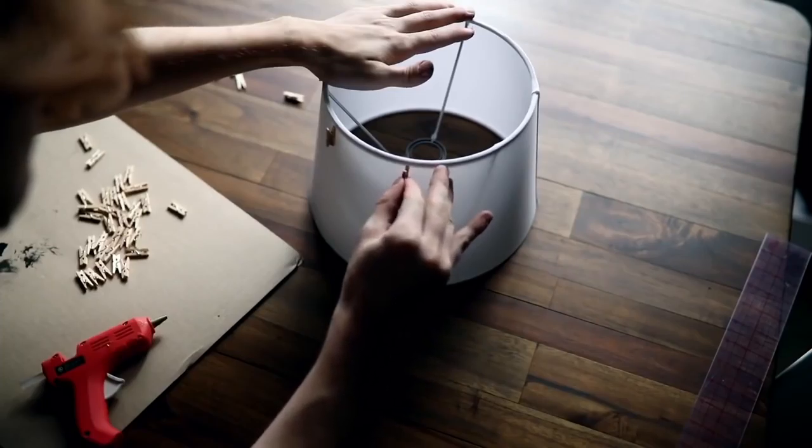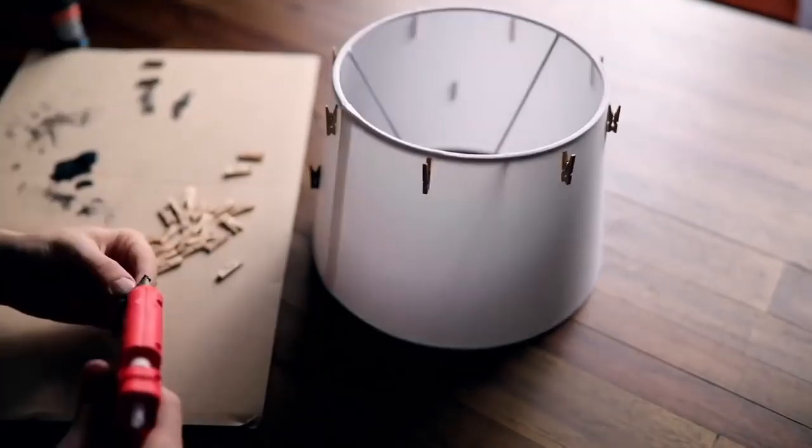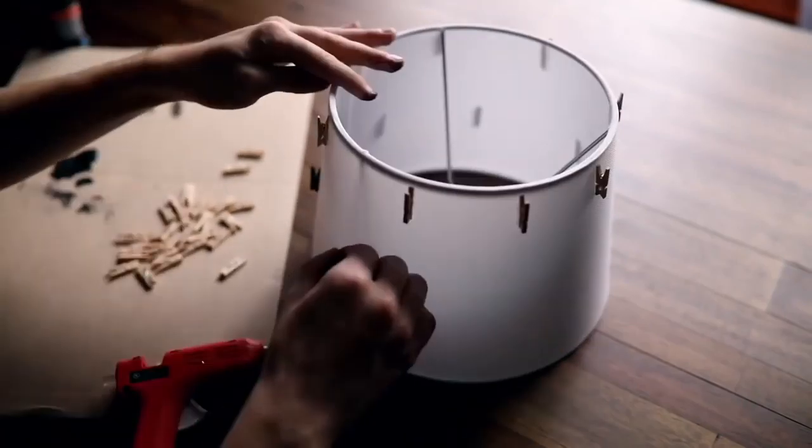All you have to do for this project is literally glue down the clothespins all the way around the exterior of the lampshade, just kind of spacing them out however you would like them to go.